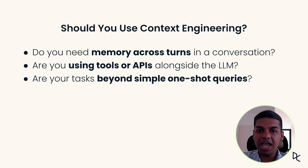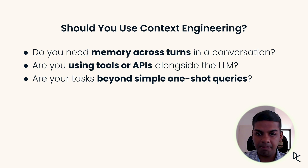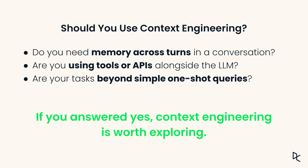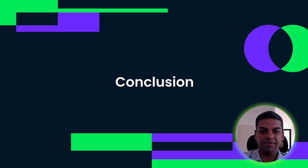Should you use context engineering? Ask yourself three questions: Do I need memory across turns? Do I need to use tools or APIs? Are my tasks more complex than simple one-shot queries? If the answer is yes, context engineering is definitely worth exploring. But not every problem needs it — for simple Q&A, one-shot summarizations or single-turn commands, plain prompting works just fine. Keep it simple when you can; less complexity means faster results.